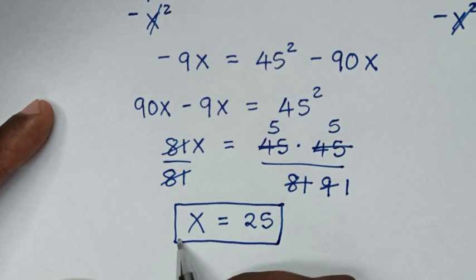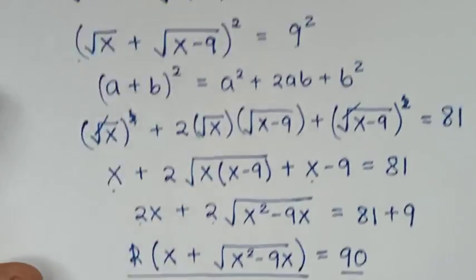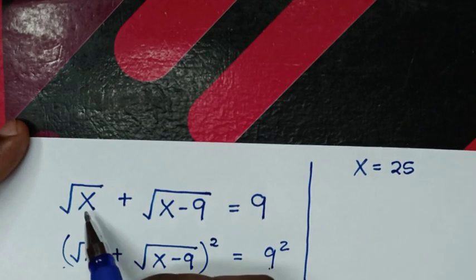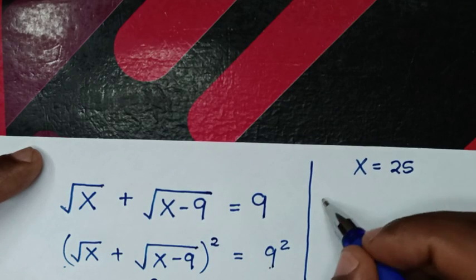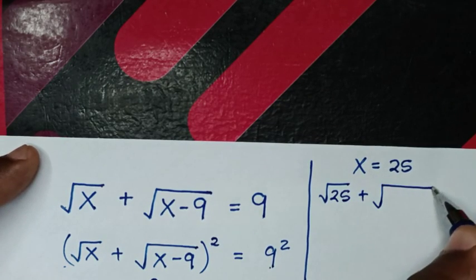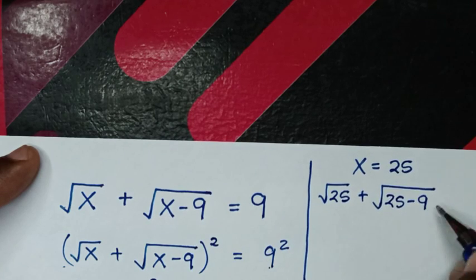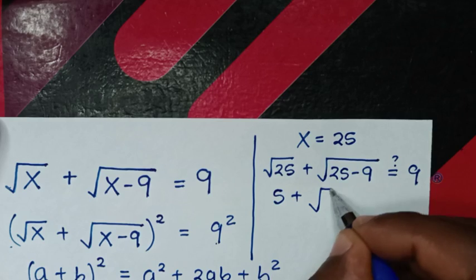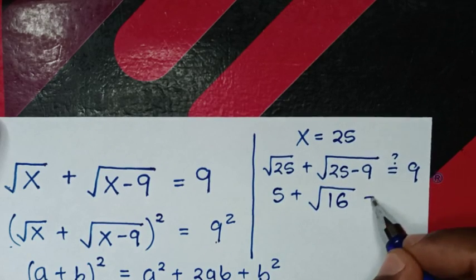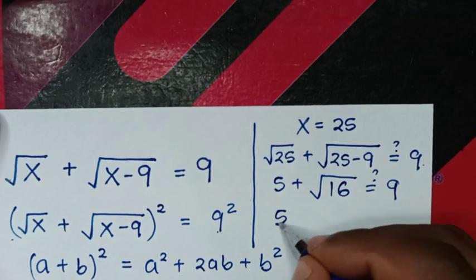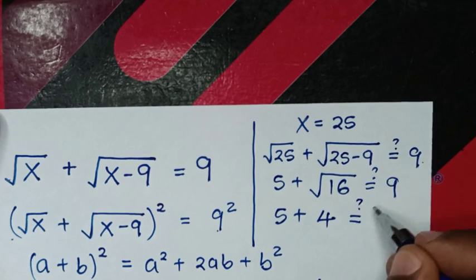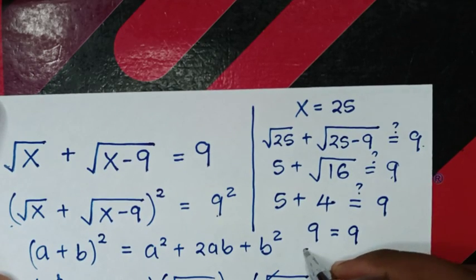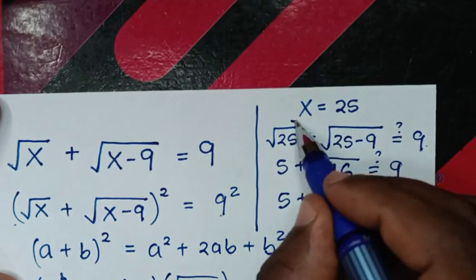Now let's check if x equals 25 is correct. We substitute x = 25 into the original equation: √25 plus √(25−9) equals 5 plus √16, which is 5 plus 4, equals 9. The left side equals the right side, so it is confirmed that x equals 25 is correct.